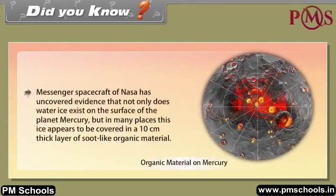Did you know? NASA's Messenger spacecraft has uncovered evidence that not only does water ice exist on the surface of the planet Mercury, but in many places this ice appears to be covered in a 10 cm thick layer of soot-like organic material.